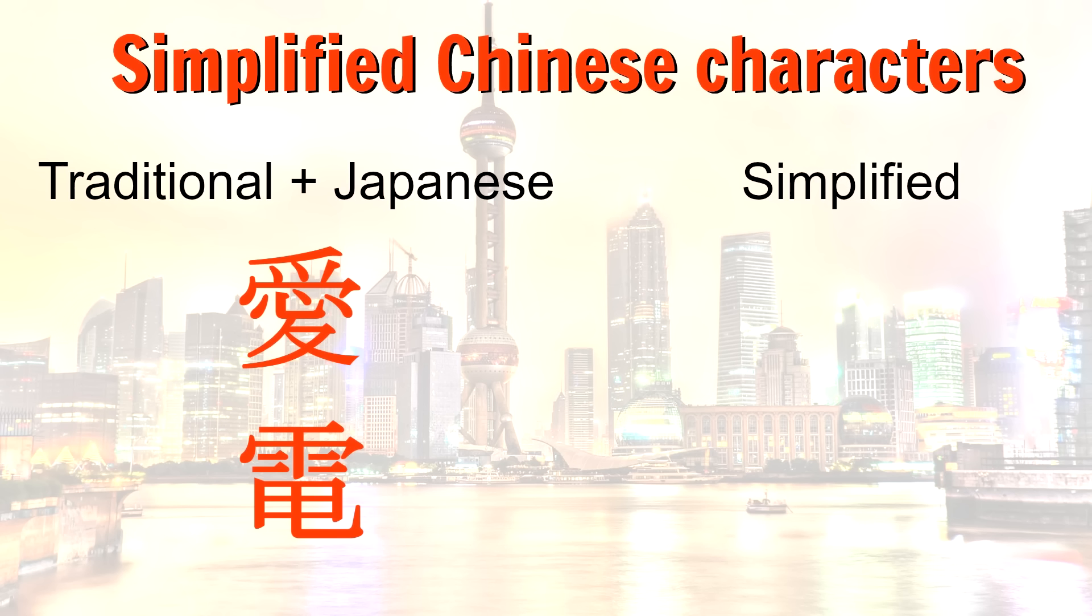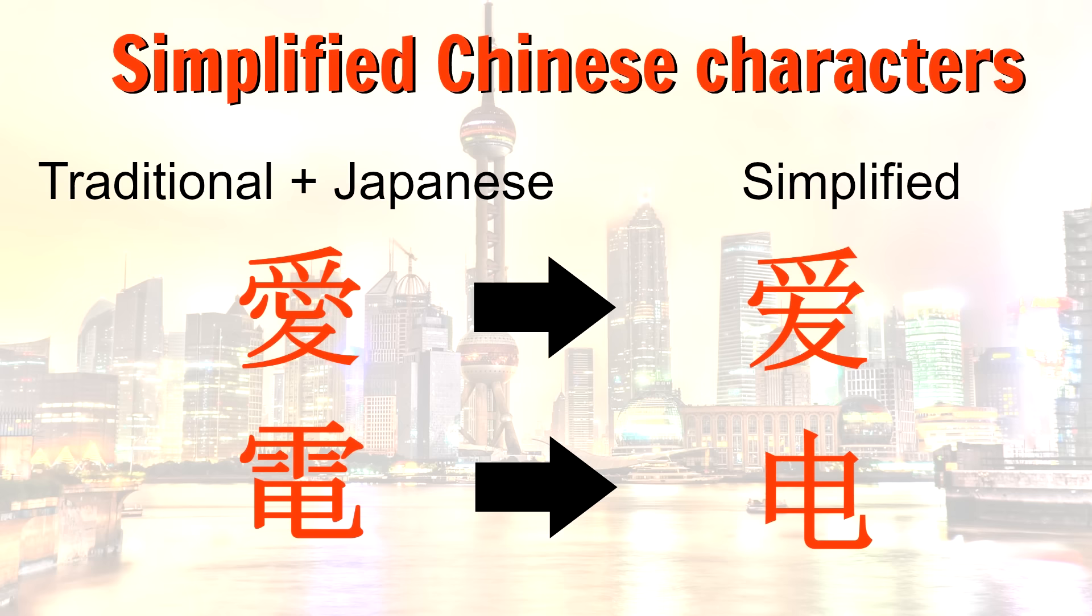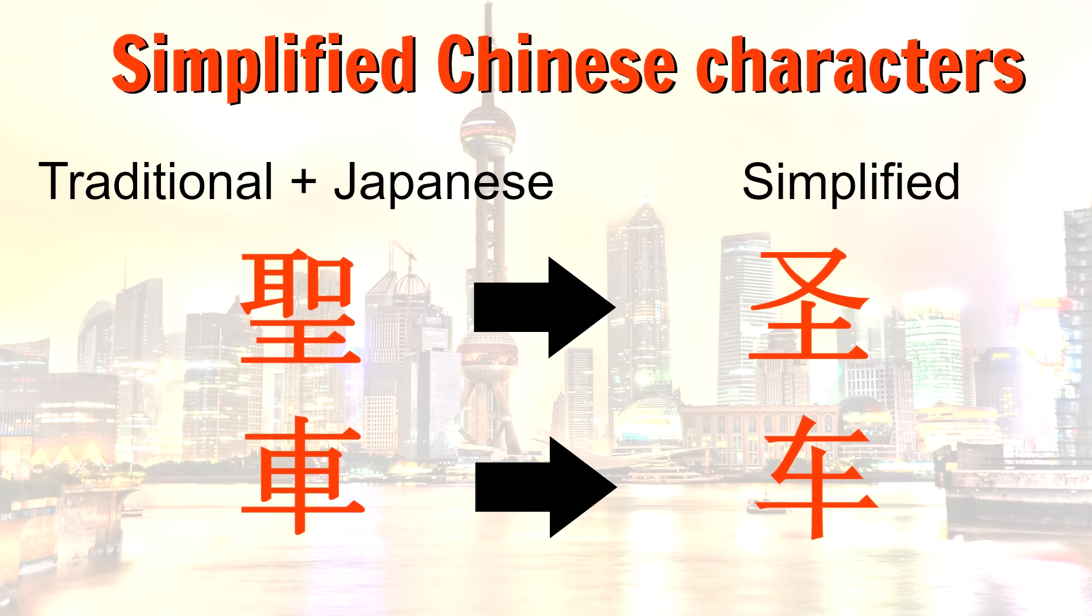It's also important to point out that in mainland China simplified Chinese characters are now used as opposed to the traditional Chinese characters used in Taiwan and in Hong Kong. That means that someone from mainland China may have some more trouble recognizing Japanese kanji than someone from Taiwan for example.